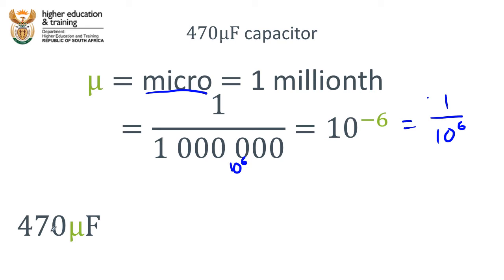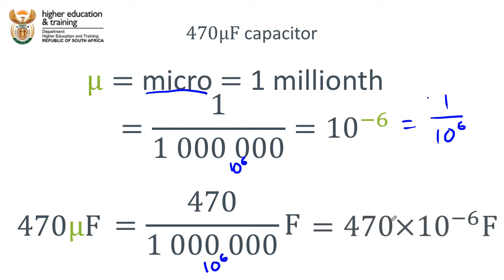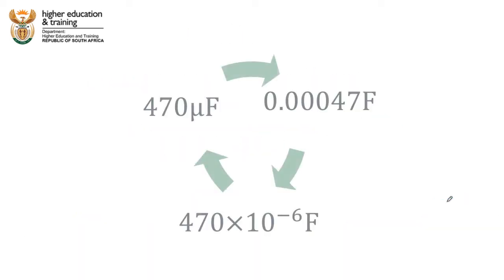So in our example, 470 microfarads, well, that's the same thing as saying 470 millionths of a farad. This millionth here is 10 to the power 6, remember? So we can write that as 470 times 10 to the power negative 6 farads. That means a millionth. They all mean the same thing, 1 millionth. So in the case of our example, 470 microfarads is the same as 470 times 10 to the negative 6 farads.